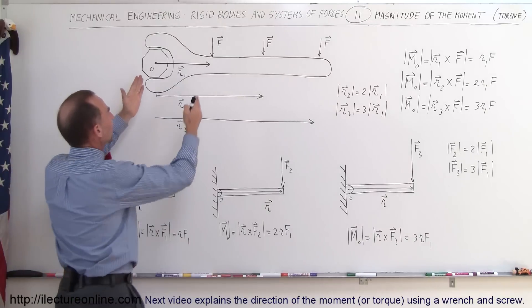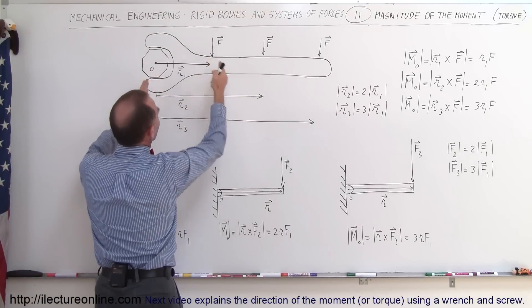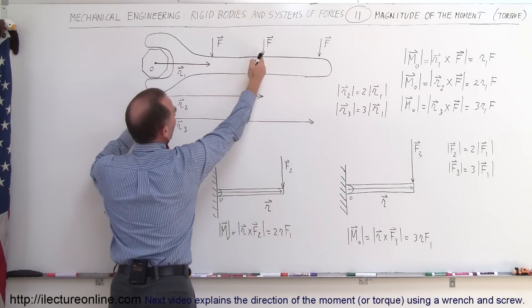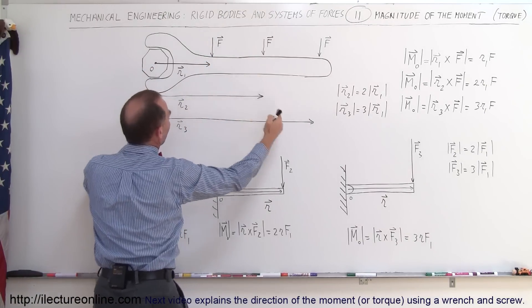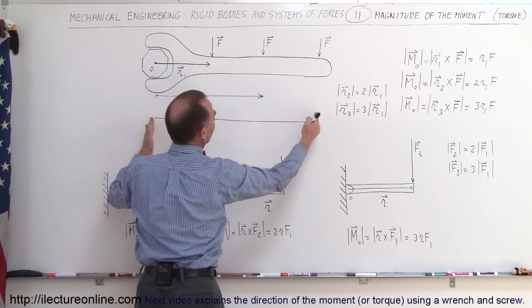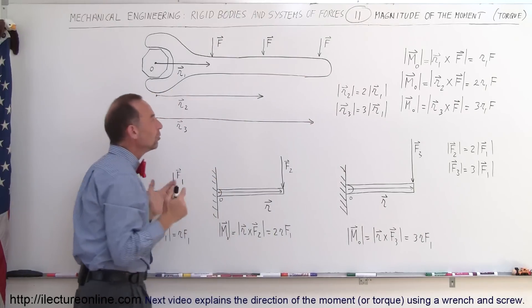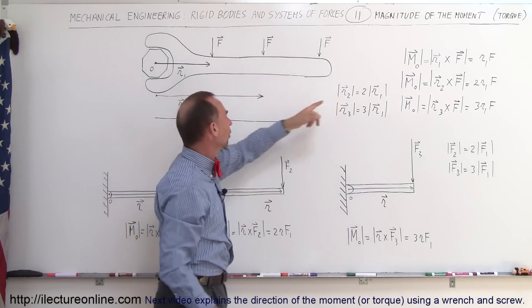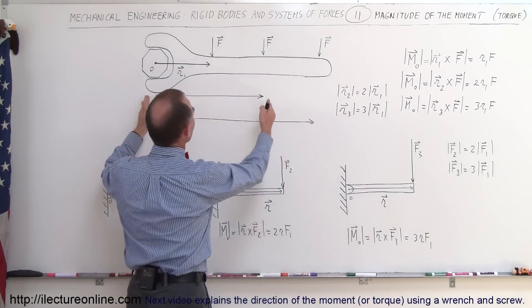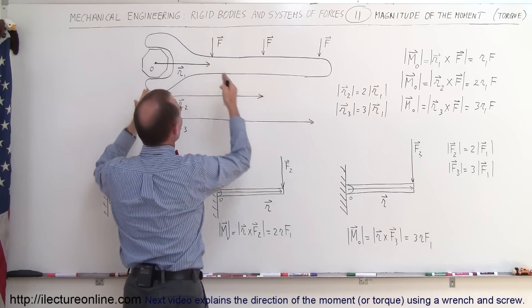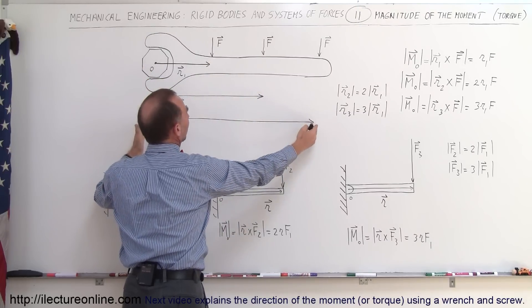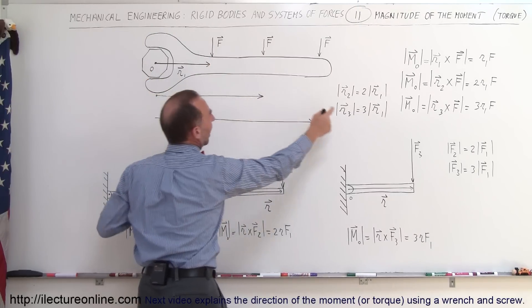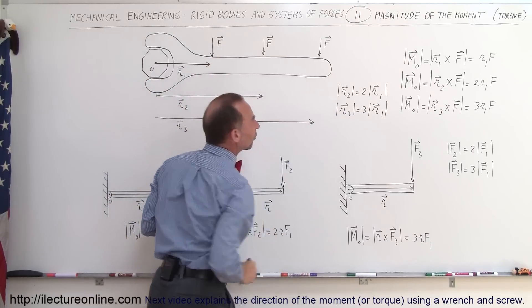We have a position vector for the force being applied there, a position vector for the force being applied there, and a position vector for the force being applied there. Notice that the magnitude of R2 — this distance — is twice this distance, and this distance is three times this distance, as is indicated over there.